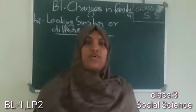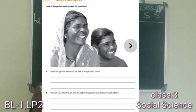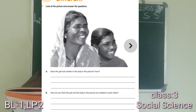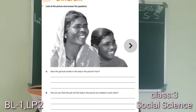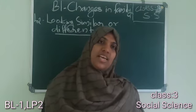Let us discuss our S2 worksheet. All of you take your S2 and write the date. First question: Look at the picture and answer. Question A: Does the girl look similar to the lady in the picture? Yes — they are similar in color, nose, eyes, and teeth. Question B: How do you think the girl and the lady in the picture are related to each other? They are mother and daughter. Hope that's clear. Thank you, have a nice day.